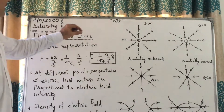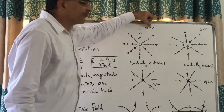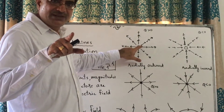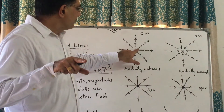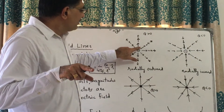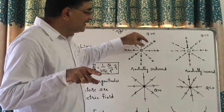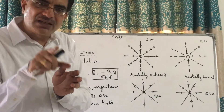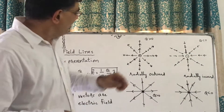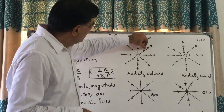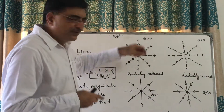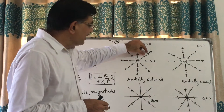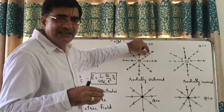Now, we want to draw electric field lines for a point-like positive charge. Put here a unit positive charge. This will offer a repulsive force, so the electric field will be in this direction, and the length of the vector — or say magnitude — is proportional to the electric field intensity at that point. If I put a unit positive charge farther away, we know that the electric field intensity will be less, so the magnitude represented by length is smaller.